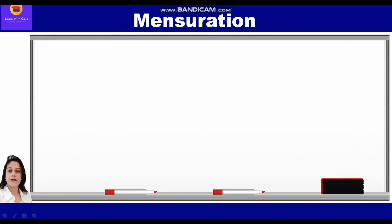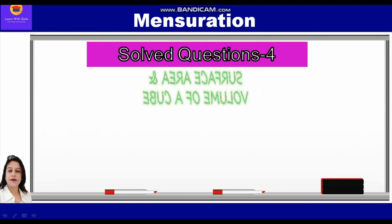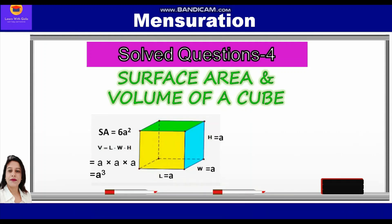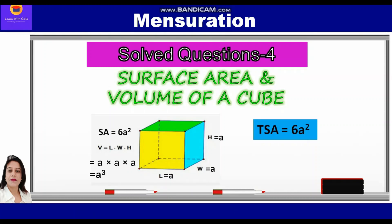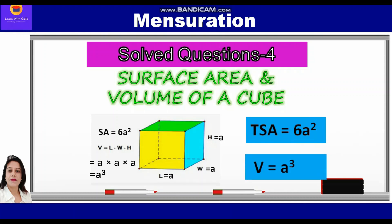Hello everyone. In this video on mensuration, we shall take up some solved questions related to surface area and volume of a cube. The total surface area of a cube is 6a² and the volume of a cube is a³. So let's start with the questions.